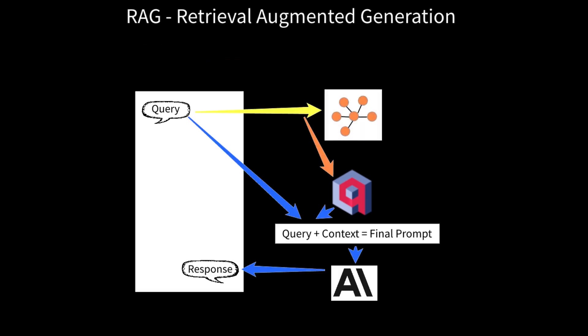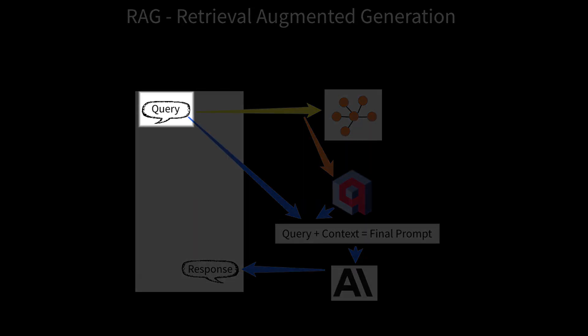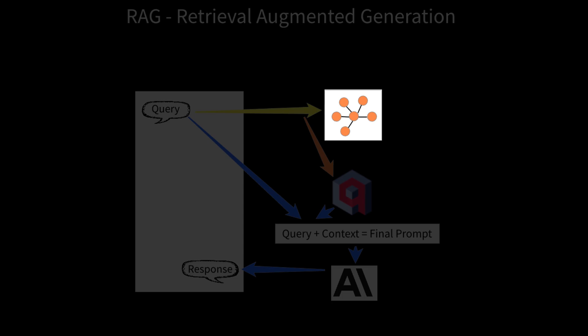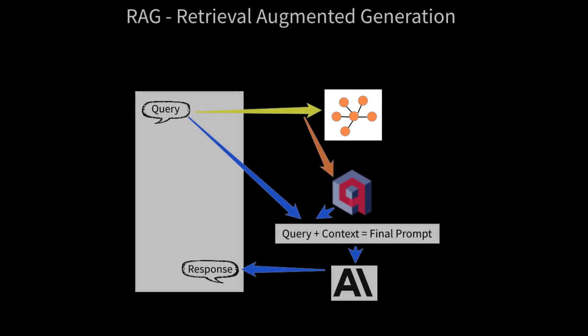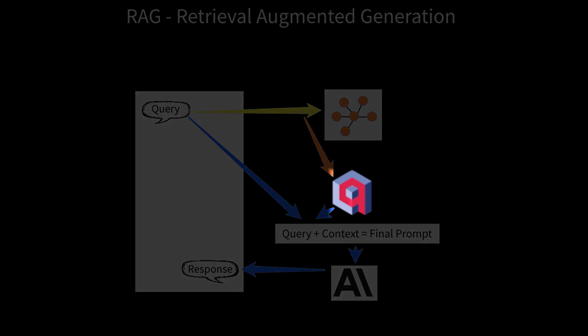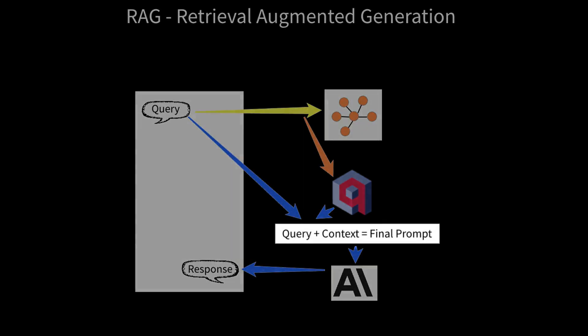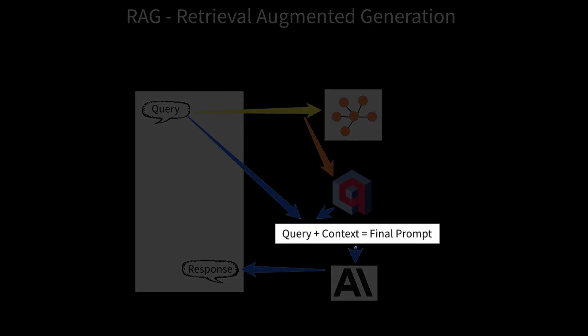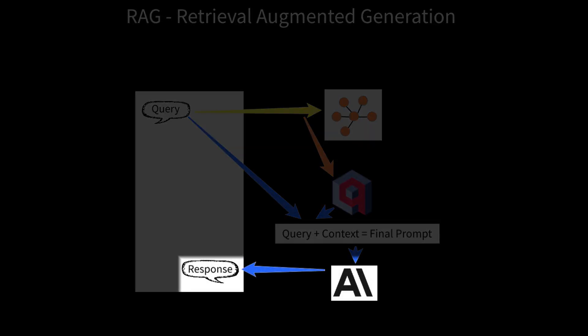The search and retrieval process begins with the user typing in a query to the LLM. That query then gets sent to the same embedding model that embedded the documents, where an embedding — again, an array of floats — is generated that represents the query. This embedded query is then used to search the vector database to find similar embeddings, or chunks, that are most likely to have the data necessary to respond to the query. The most relevant chunks, along with the original query, are then added to the context of the LLM so that it can reason about the query and form a response.